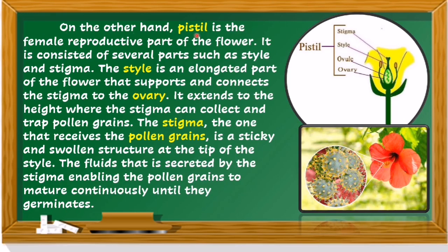The pistil is the female reproductive part of the flower. It is composed of several parts such as the style and stigma. The style is an elongated part of the flower that supports and connects the stigma to the ovary. It extends to the height where the stigma can collect pollen grains. The stigma, which receives the pollen grains, is a sticky and swollen structure at the tip of the style. Fluids secreted by the stigma enable the pollen grains to mature until they germinate.